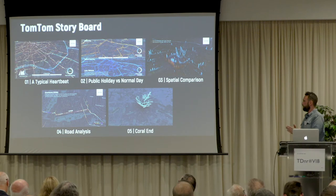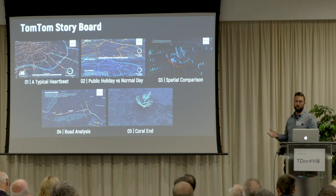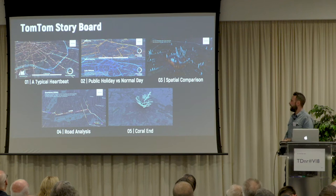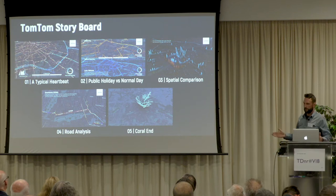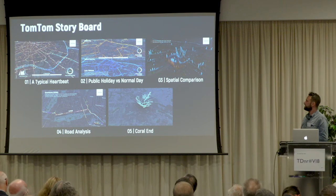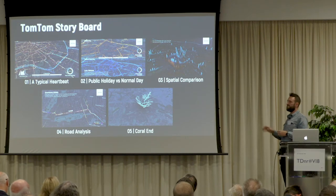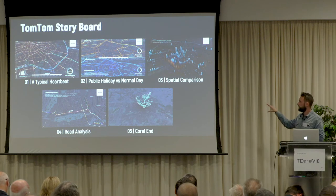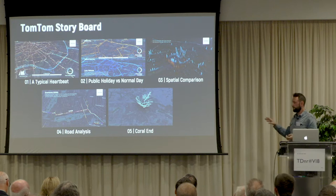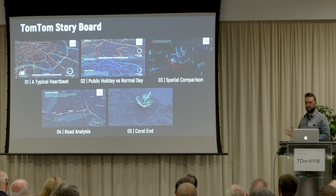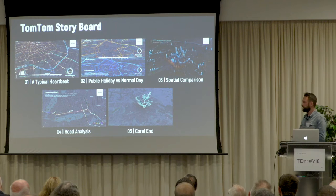The storyboard we developed with TomTom was split into three chapters. Chapter one: we wanted to show a typical heartbeat for vehicle flow during a typical Monday, augmented with different metrics to show the total number of journeys and how they varied throughout different commuter zones. Chapter two involved comparing a public holiday — King's Day — to a typical Saturday. King's Day also fell on a Saturday, and we wanted to use some intelligent spatial analysis to create a composite overview of what those trends were at the end of the visualisation.